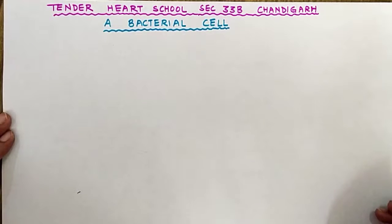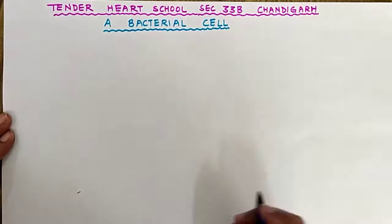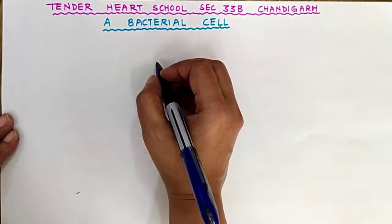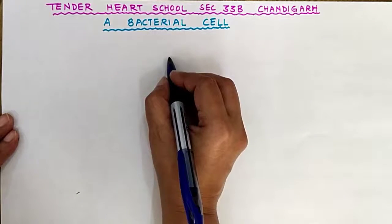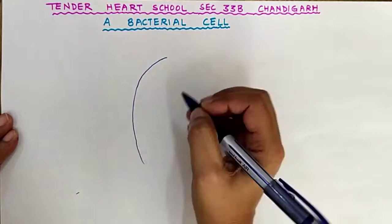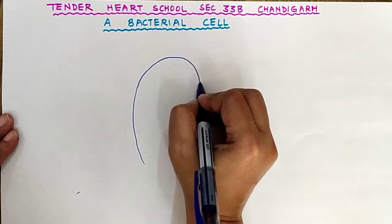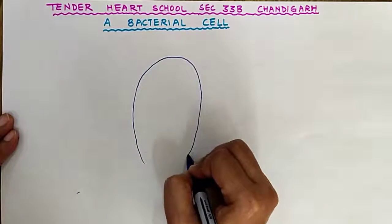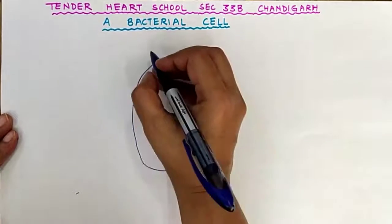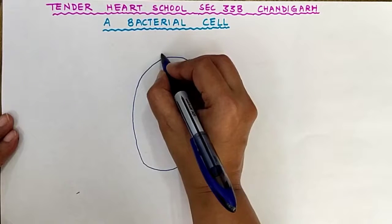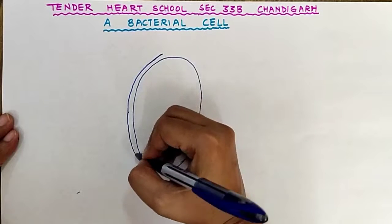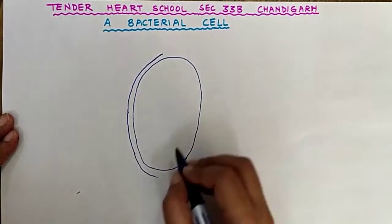Good morning students. Today we will learn to draw a bacterial cell. The cell of a bacteria is a primitive kind of cell, so it is a very simple cell. You can show the cell membrane — the cell membrane is surrounded by a cell wall, just like a plant cell.